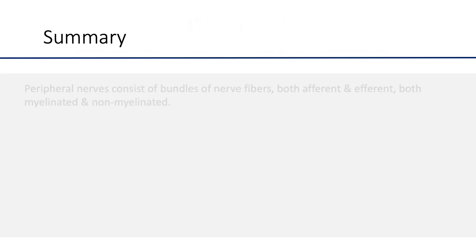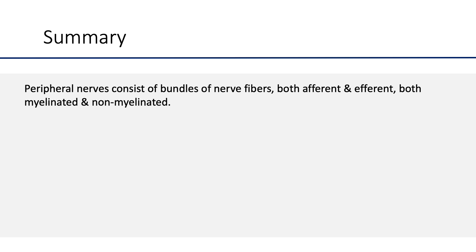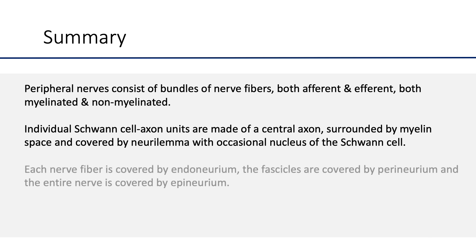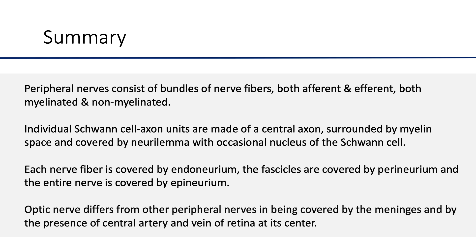Quickly recalling what you have seen so far: peripheral nerves consist of bundles of nerve fibers, both afferent and efferent, both myelinated and non-myelinated. Individual Schwann cell axon units are made up of a central axon surrounded by myelin space and covered by the neurolemma, with occasional nucleus of a Schwann cell. Each nerve fiber is covered by endoneurium, the fascicles are covered by perineurium, and the entire nerve is covered by epineurium. The optic nerve differs from other peripheral nerves in being covered by the meninges and by the presence of the central artery and vein of the retina at its center.